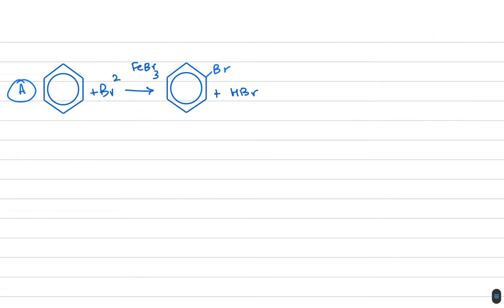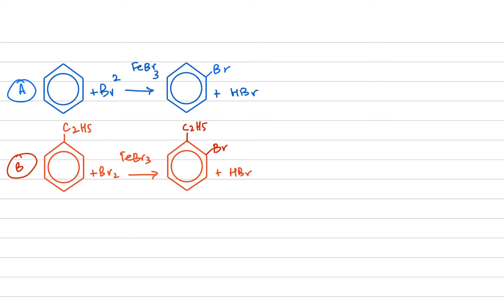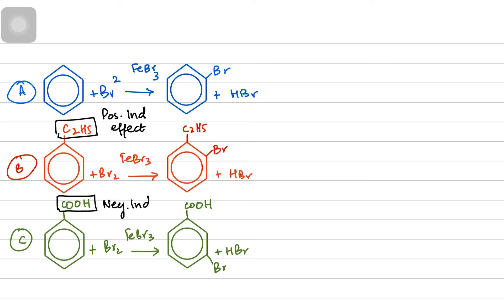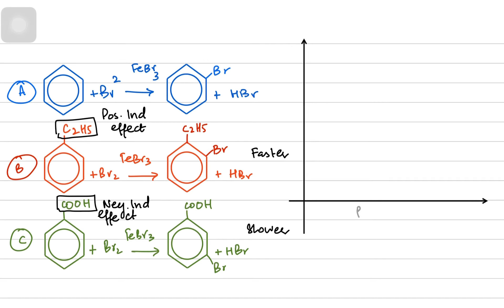Now consider these three reactions: in reaction A, benzene reacts with bromine; in reaction B, ethylbenzene reacts with bromine; and in reaction C, benzoic acid reacts with bromine. The ethyl group has a positive inductive effect on the benzene ring while the carboxylic acid has a negative inductive effect. Reaction B is going to be the fastest because ethylbenzene makes the ring more reactive, while benzoic acid makes it the least reactive.